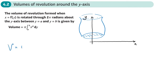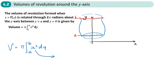Our volume is π times — now our limits are going to be y-limits, so our values of a and b, so b and a — they are y-limits. And x-squared dy, which means that this needs to be x given in terms of a function of y.